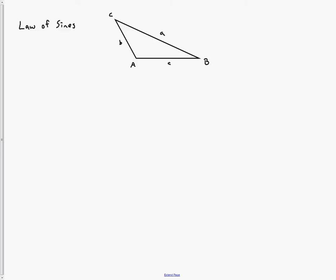What we're going to start with is the Law of Sines. If I take an oblique triangle and label all of the vertices with capital letters A, B, C — those are my angles — and I label the sides opposite those angles as their lowercase equivalents: little a is opposite big A, little b is opposite big B, and little c is opposite big C.